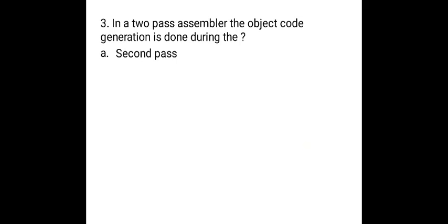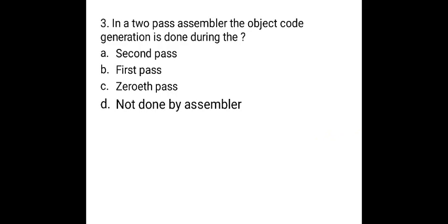Third one. In two-pass assembler, the object code generation is done during: whether it is done during second pass, first pass, zeroth pass, or none done by the assembler. And the answer is, during the second pass of the assembler we are going to generate the object code that we have shown just in the flowchart at the end there.